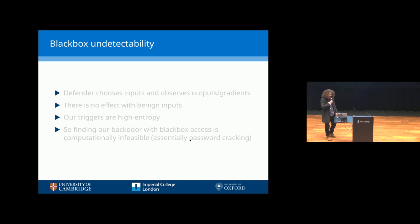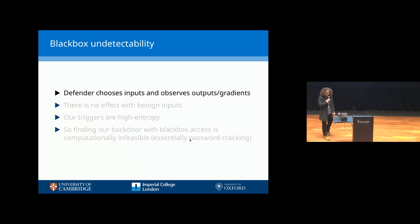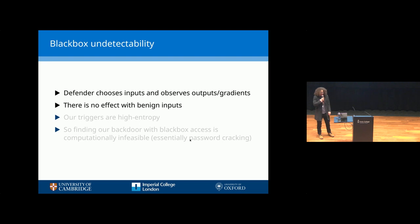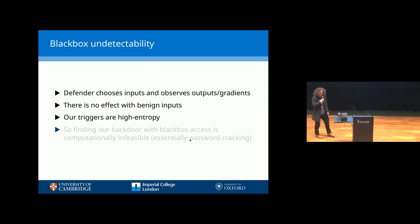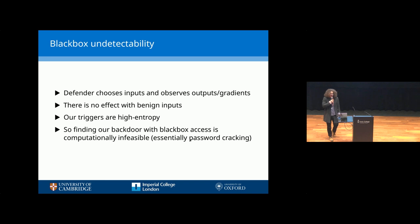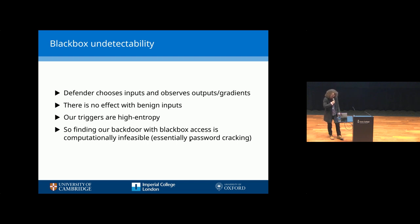We claim that our backdoor is black-box undetectable. We define a black-box detection attempt as a scenario where the defender has a model, wants to know whether it has a backdoor, and can choose any input and observe the output and even the gradients. With our backdoor, there will be exactly no change in output for any input that doesn't contain the trigger. Our triggers are high entropy — that image example had 300 bits of entropy. The only way to find our backdoor, given that scenario, is to enumerate all possible versions based on that entropy and knowing the scheme, which is essentially a password-cracking problem. We have collectively decided that is computationally infeasible, and by the same standards, this backdoor is black-box undetectable.